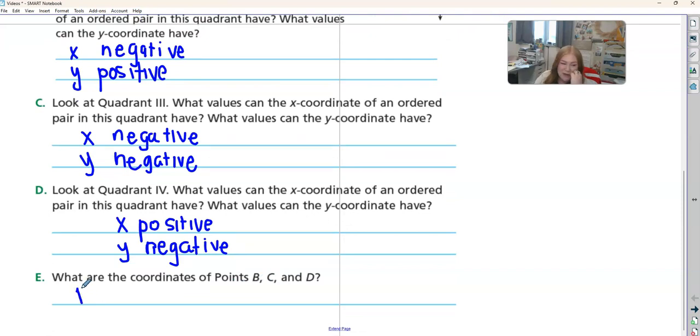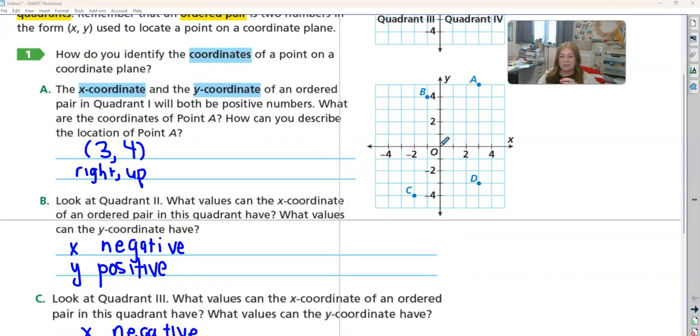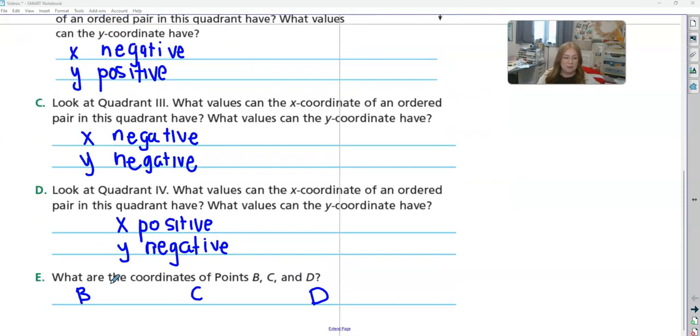Okay, now it just wants us to find what b, c, and d are. So let's find b. So we start at 0, 0. So we went over to the left, negative 1, and then up 4. So b was negative 1 and then up 4.